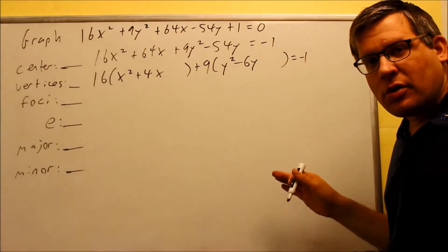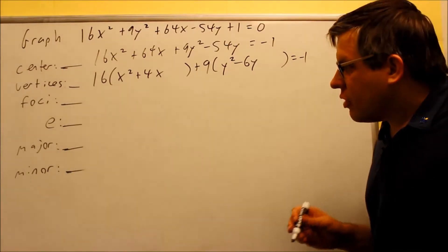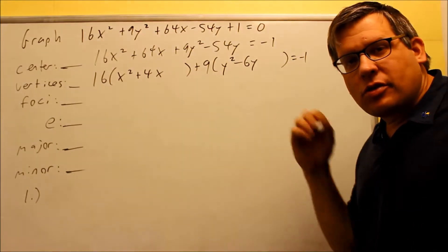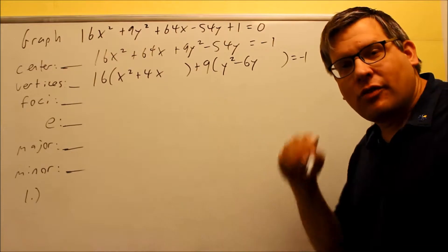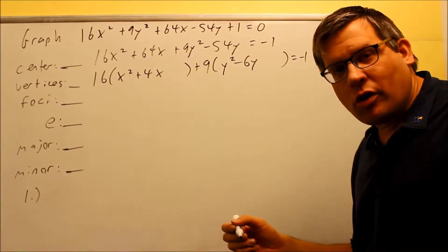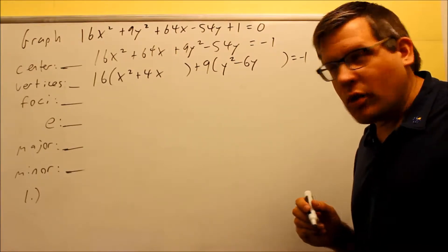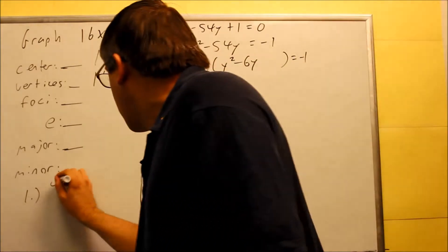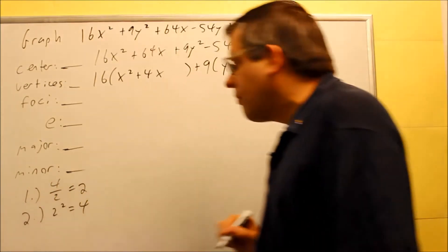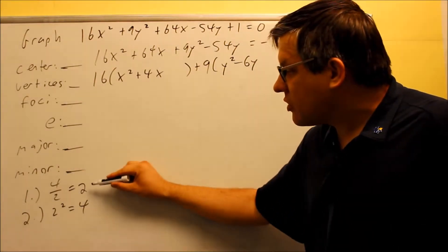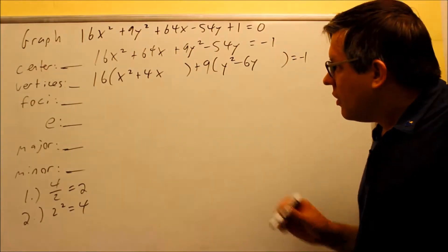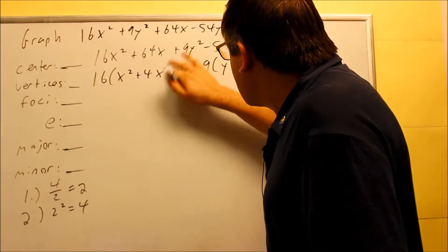Now it's properly set up and I'm ready to do the complete the square steps. For the x group, the first step is to divide the coefficient of the non-squared variable by 2: 4 divided by 2 equals 2. Step two, square it: 2 squared equals 4. So we add that 4 inside the parentheses.